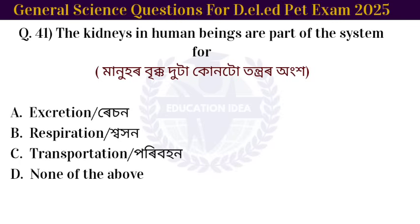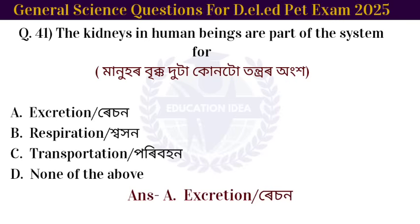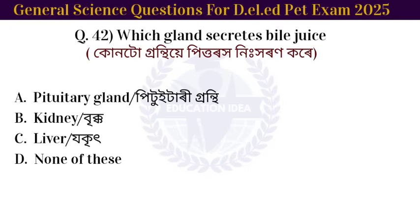Next question: the kidney in human beings is part of the excretory system. Next question: which gland secretes bile juice? The answer is the liver.